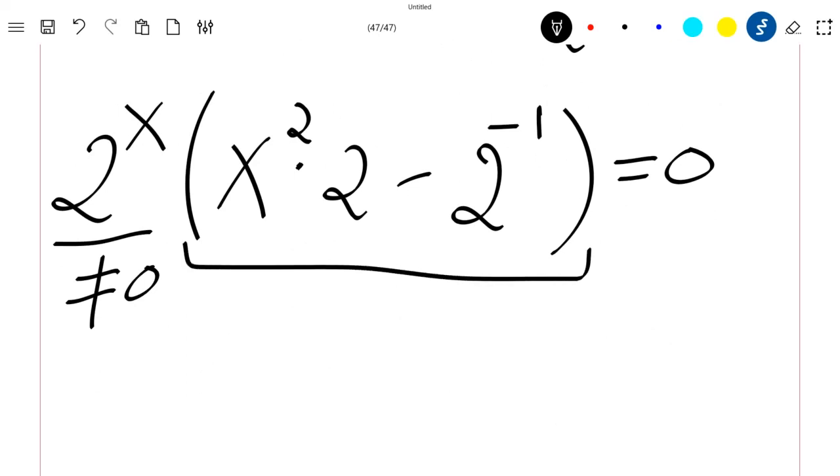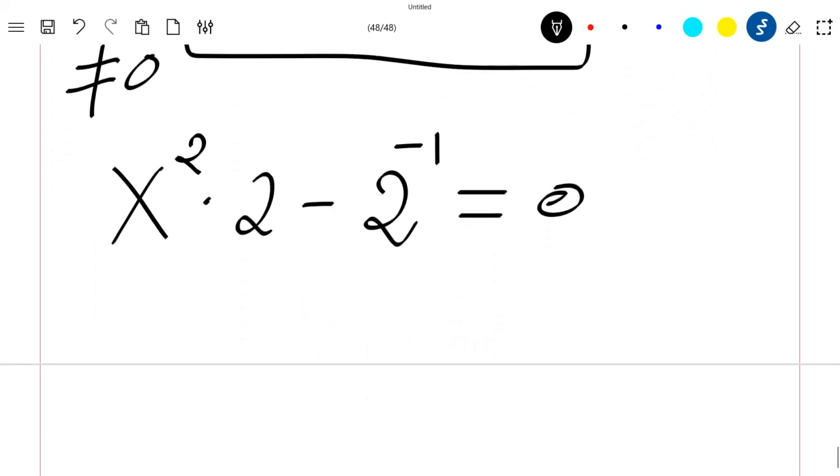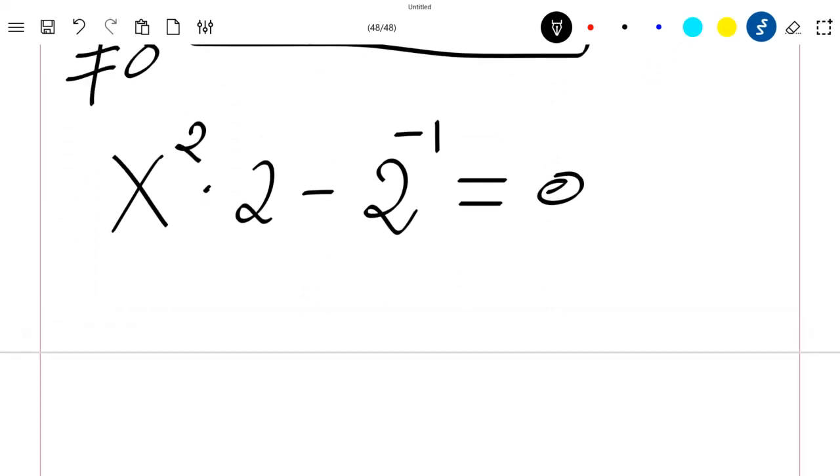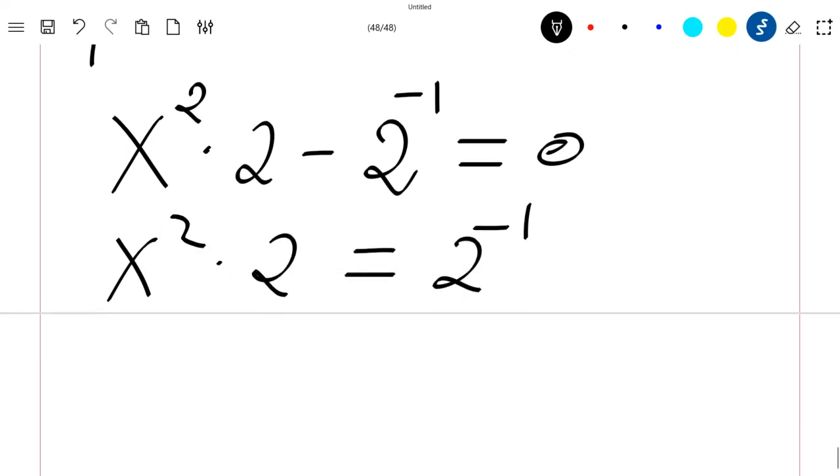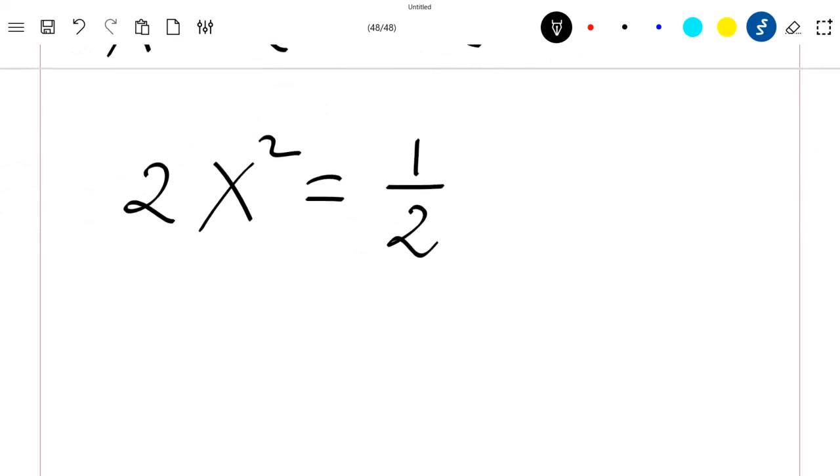this means only this can be equal to 0. So my equation just becomes x square times 2 minus 2 power minus 1 equal to 0. Now what is this? This is just x square times 2 is equal to 2 minus 1. This is again 2 x square times 1 divided by 2. If I divide everything by 2,